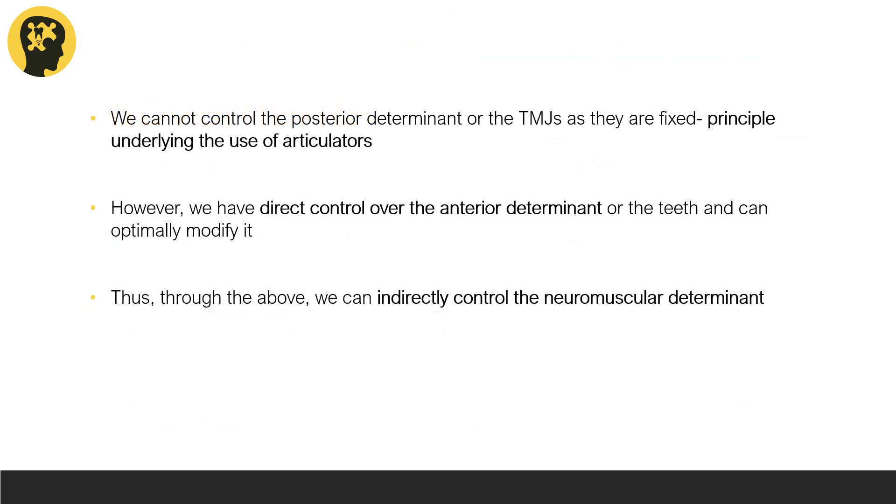The TMJs are the way they are, and there's nothing we can do about that, which is why we try to replicate the TMJ on the articulator using the patient's bite records. But we have direct control over the teeth, so the restorations that we provide must be harmonious. We give them an anatomy such that it is in harmony with the patient's existing TMJ and neuromusculature.